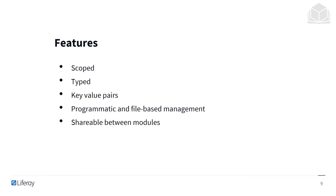As with portlet preferences, data in the configuration API is stored in key-value pairs. With the configuration API, however, the values have strong Java typing. Also, similar to portlet preferences on Liferay DXP, the configuration can be scoped.